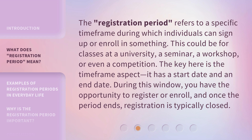The registration period refers to a specific time frame during which individuals can sign up or enroll in something. This could be for classes at a university, a seminar, a workshop, or even a competition. The key here is the time frame aspect — it has a start date and an end date. During this window, you have the opportunity to register or enroll, and once the period ends, registration is typically closed.